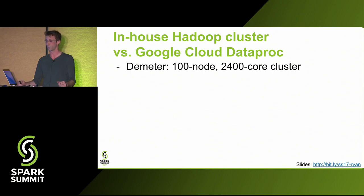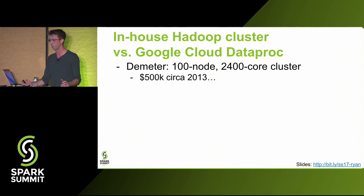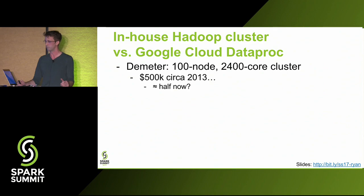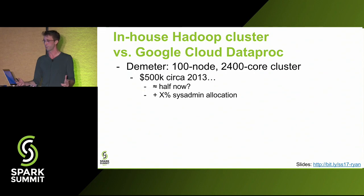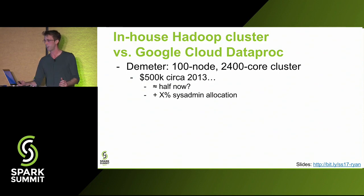Our Hadoop cluster is called Demeter. It's 100 nodes, 2,400 cores, bought four years ago for about half a million dollars. My boss thinks it would cost about half that now. It comes with some sysadmin allocation needed to set up and maintain a cluster of this size. It's served us very well — all of my Spark and Hadoop experience came from this cluster. We've had some success running HPC-style workloads on it, though we've mostly kept it allocated as a Hadoop cluster.